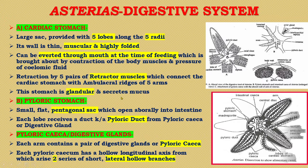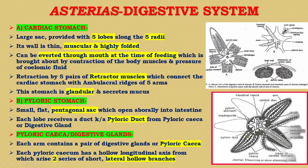The next part is the pyloric stomach, which is a small, flat, pentagonal sac. It opens aborally into the intestine. Each lobe receives a duct known as the pyloric duct from the pyloric caeca or digestive glands. The pyloric stomach gives rise to a pyloric duct which further bifurcates into two small ducts leading to the pyloric caeca. Pyloric caeca are also known as digestive glands, and each arm of Asterias contains a pair of digestive glands or pyloric caeca.